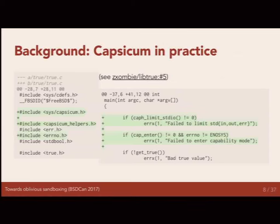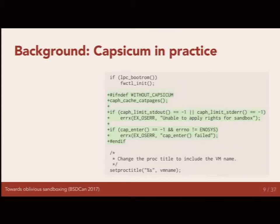Using Capsicum in practice: here's an example from Beehive. It's actually quite simple. The two aspects of Capsicum — we need to enter capability mode, and if that doesn't work we fail out. We also need to provide some limitation on file descriptors we've already opened. There's a helper function in usr/include/capsicum-helpers which calls cap_rights_limit and limits ioctls and other things on standard in, standard out, and standard error. But there's also this other helper function called caph_cache_catpages, which we'll come back to.